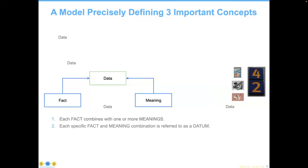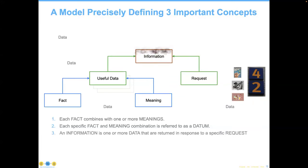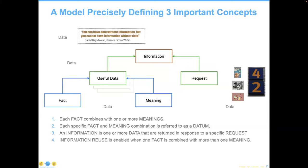Data is what happens when a fact is associated with a meaning. So 42 could mean the meaning of life per Douglas Adams, Jackie Robinson's jersey, or whether Peter is allowed to consume adult beverages. A fact combines one or more meanings, and each fact and meaning is referred to as a specific piece of data. The key question is: can we tell which data is useful to us? Information is one or more data returned in response to a specific request. If somebody hasn't asked for the data, it can't become information. You can have data without information, but you can't have information without data.